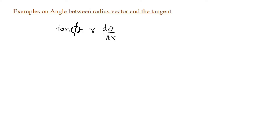Another expression we obtained for the angle between the radius vector and tangent is cot φ. If you take the reciprocal of tan, you will get cot φ = (1/r)(dr/dθ). This formula was already discussed in the previous video, which you can watch for the full derivation.